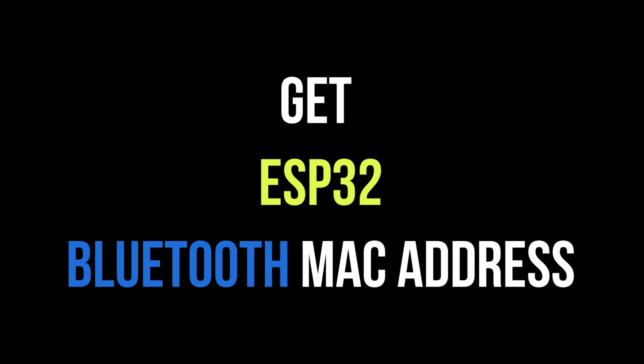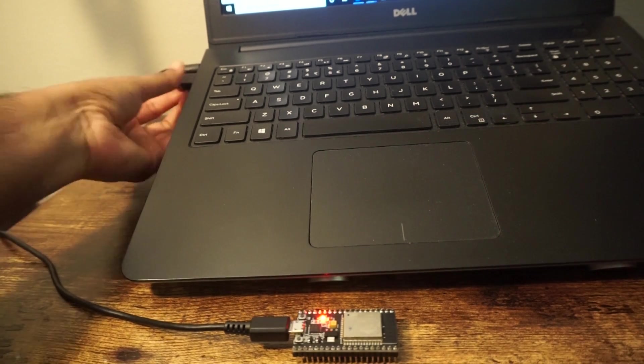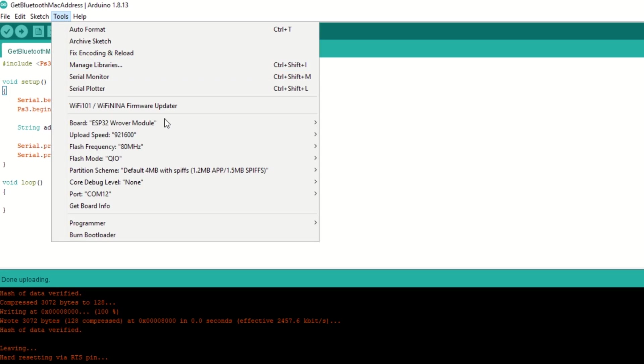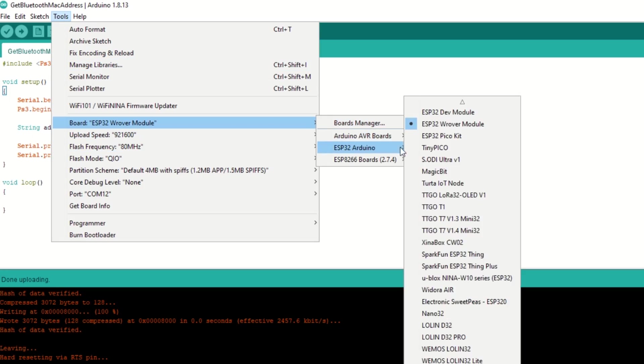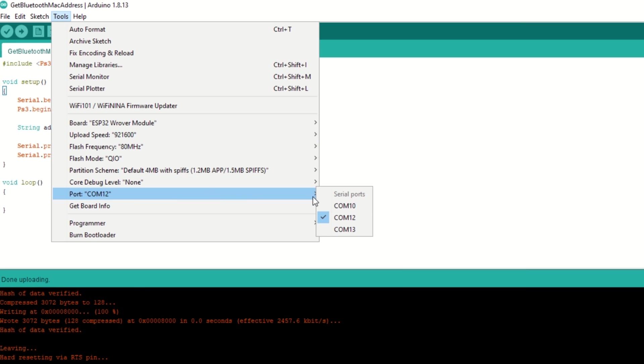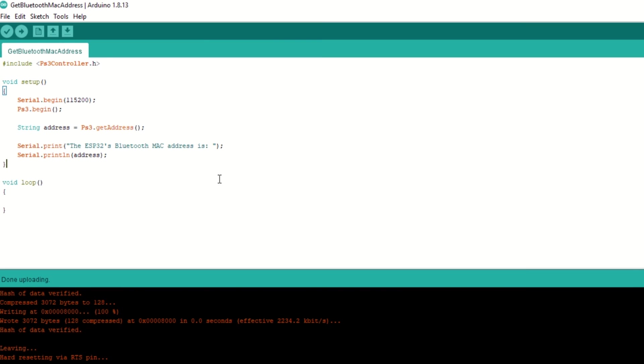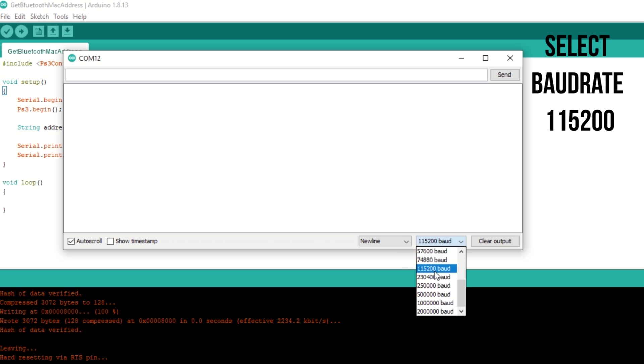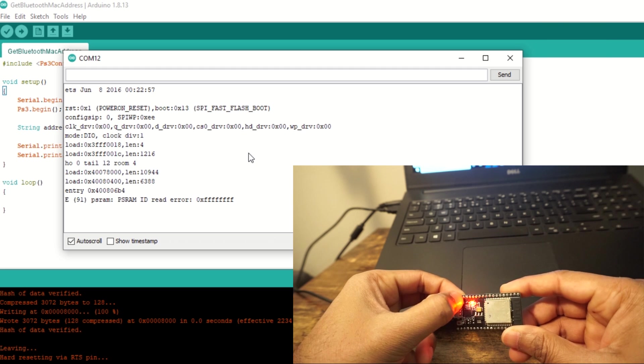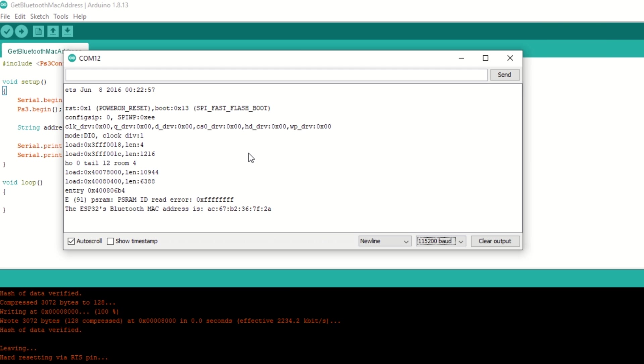Now we need to get Bluetooth MAC address of the ESP32 board and set it inside PS3 controller. For that connect ESP32 board to laptop and upload this get Bluetooth MAC address code. Select ESP32 module and port. Hit upload. Once uploaded open serial monitor and press enable button on ESP32 module. You can see that the MAC address is printed. Note this down because we will use it to set it inside PS3 controller.